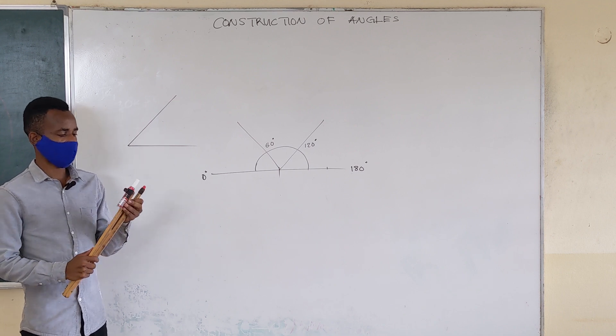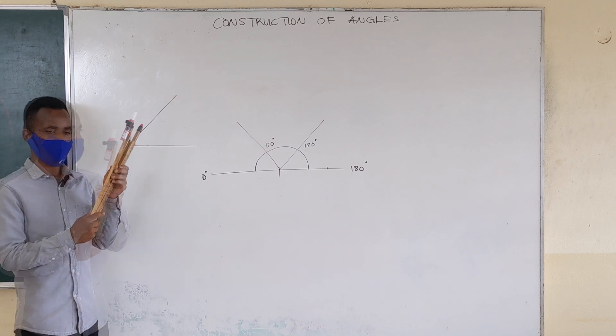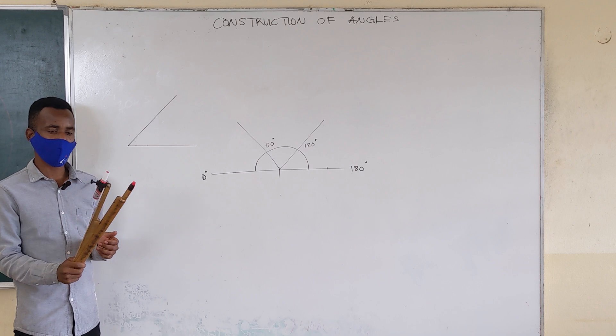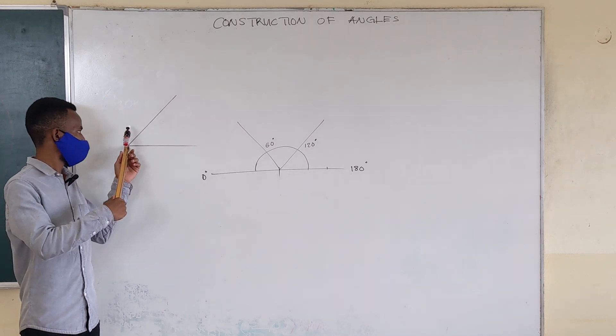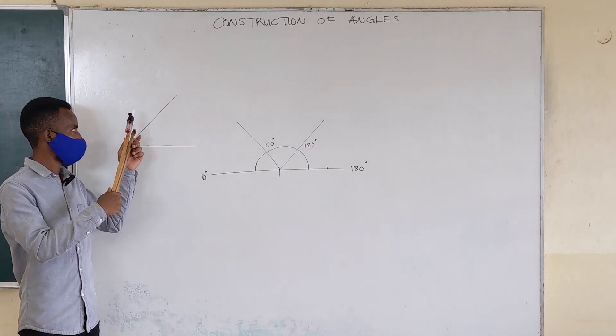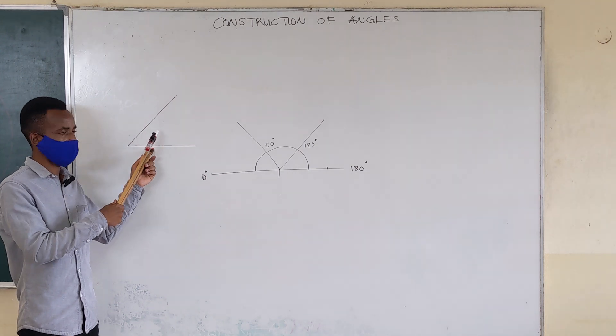The principle for bisecting is this. It's very simple. Get your compass, open it to any convenient radius such that when you stand at this point, it will be able to cut this line at one point and this line at another point.